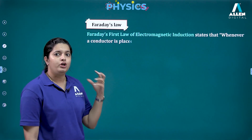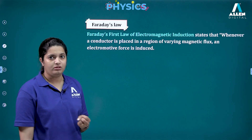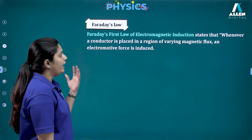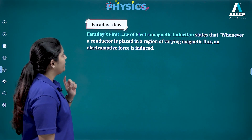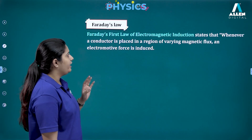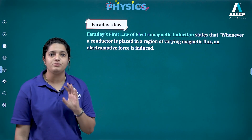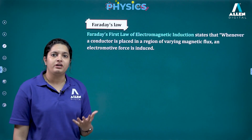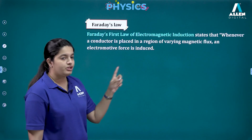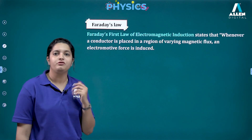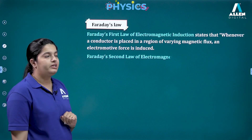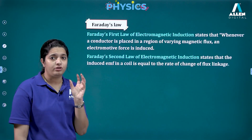All three experiments led to the laws of electromagnetic induction. The first law gives the definition of electromagnetic induction: whenever a conductor is placed in a region of varying magnetic flux, an electromotive force is produced. An EMF is nothing but a potential difference. This is the basic definition of electromagnetic induction and also the first law of Faraday.